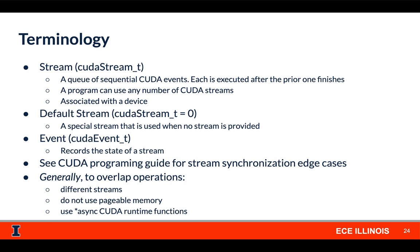If you've never explicitly used a stream in your CUDA code, you actually have — you use something called the default stream. This stream has some special semantics you can look up if you're curious. There's also something called an event, which basically records the state of a stream. At the time the event is executed, it captures what's going on in the stream for you to reference later.